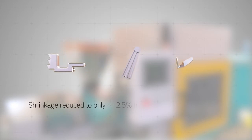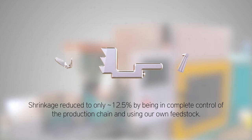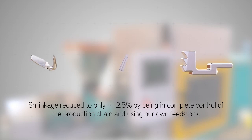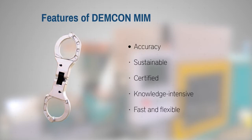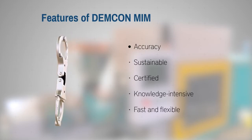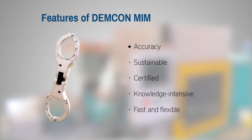Because we are in complete control of the production chain and use our own feedstock, we are able to reduce the shrinkage of the objects during the process to only 12.5%. Denkom MIM is able to create objects with a high dimensional consistency and accuracy to plus or minus 0.25% of the final dimensions.